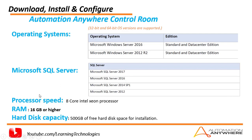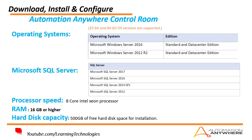For the processor speed, an 8-core Intel Xeon processor is required. For RAM, 16 GB RAM or higher is required. For hard disk capacity, more than 500 GB of free hard disk space is required for the Control Room installation.